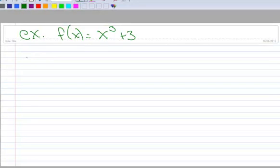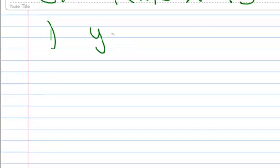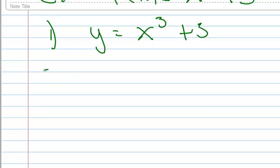So the first step, we're going to write that with our y equals to get rid of function notation. So y equals x cubed plus 3. Second step, we're going to switch the x and the y's.